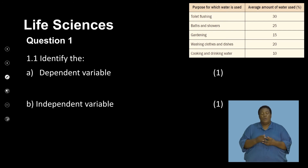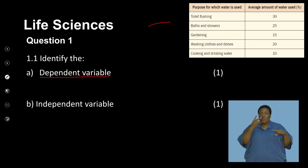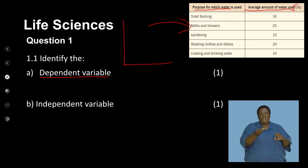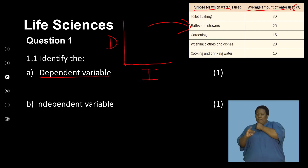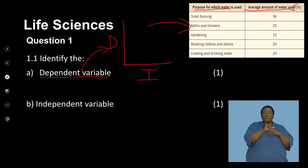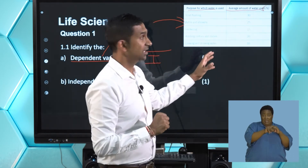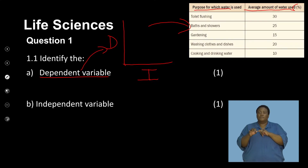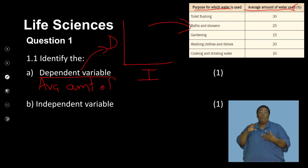A question asks to identify the dependent variable. In any experiment, the dependent variable is what is being measured to draw a conclusion or collect data. Clearly, in this investigation, it was the average amount of water used, converted to a percentage. So the dependent variable is the average amount of water used, expressed as a percentage.